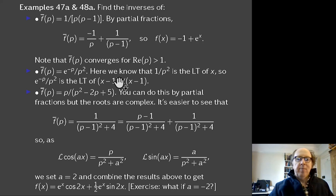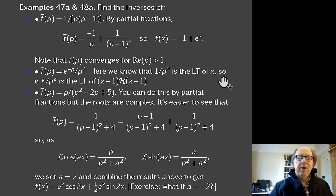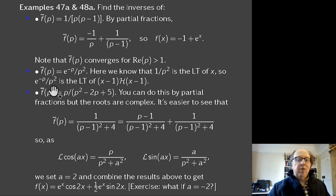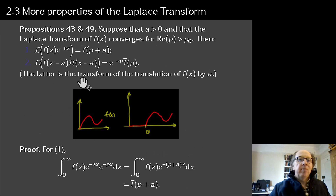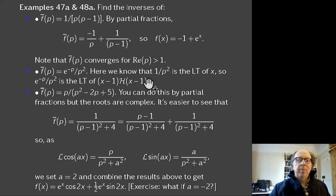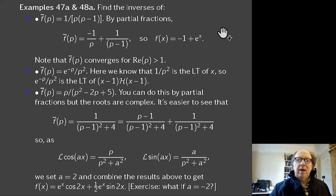For e^{−p}/p²: we know 1/p² is the Laplace transform of x. Using the translation property — f(x−a)H(x−a) transforms to e^{−ap}f̄(p) — with a = 1, this is the Laplace transform of (x−1)H(x−1), a function which is zero until x = 1 and then rises with gradient 1 after that.